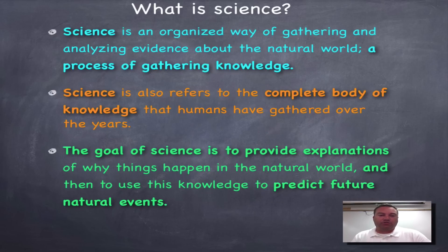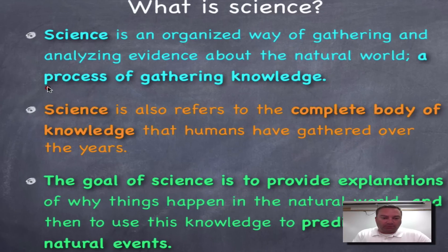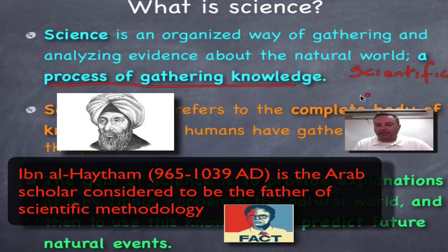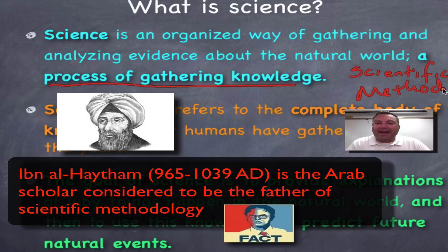As you can see on the screen, science is an organized way of gathering and analyzing evidence about the natural world. It's a process, and I really want to focus on the bold text here, because in our next episode we're going to talk about a series of steps called the scientific method — a step-by-step process of how we gather this evidence.